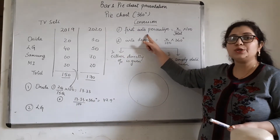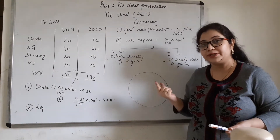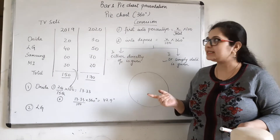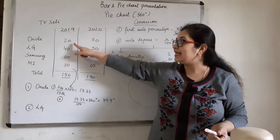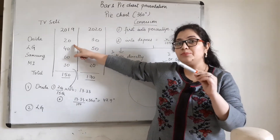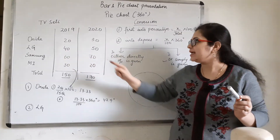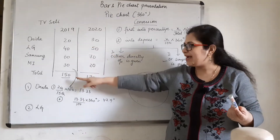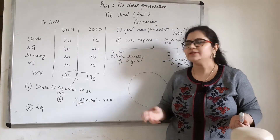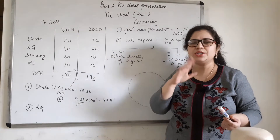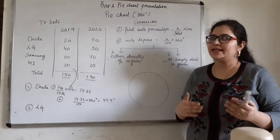Step number one: convert into percentage. How do we convert into percentage? X upon total into 100, where X is the data for that particular brand. So if you have the percentage of Onida, then: 20, which is X, divided by total which is 150, into 100. We do everything into 100 to get percentages. In this way we will solve step number one — you have converted the data into percentages.